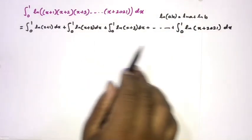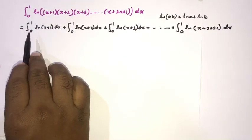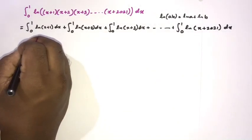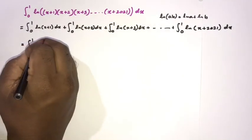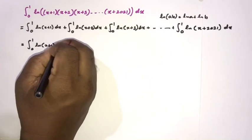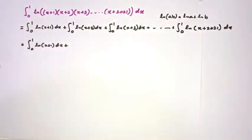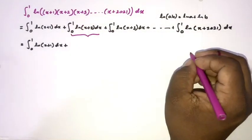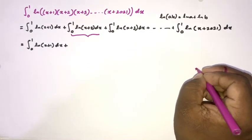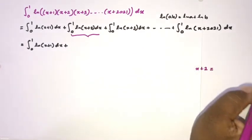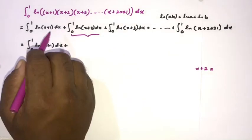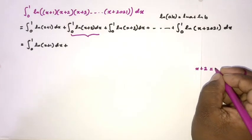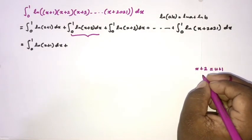Now we have these different integrals all with limits 0 to 1. For the second integral, involving ln(x+2), I am going to make a substitution. I set x+2 equal to u+1, so that the integrand becomes ln(u+1).